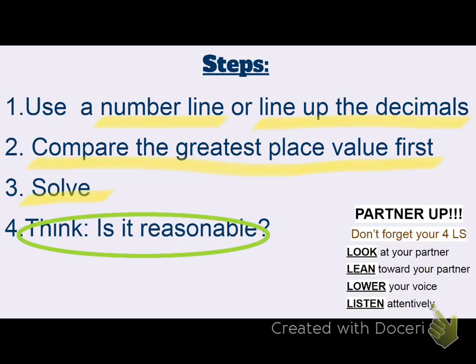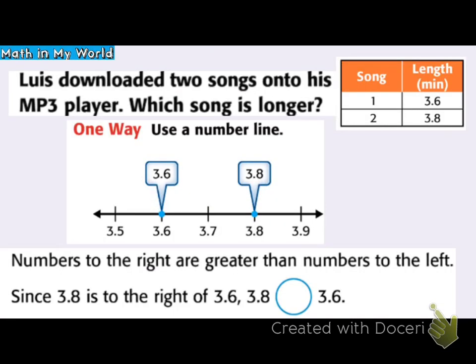So, step one: number line or line up those decimals. Step two: compare, starting with that greatest value, the number on the left. Step three: solve — compare the values and figure out what's less than or greater than. Finally, step four: is it reasonable? Does it make sense?